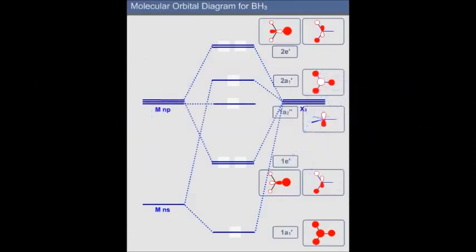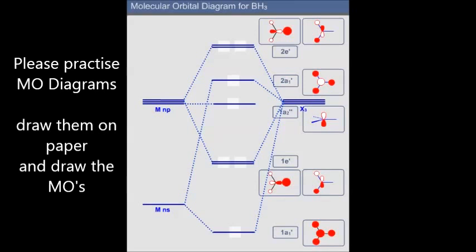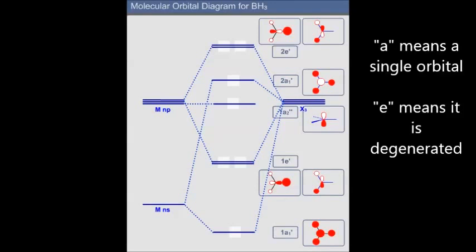So I advise you if you want to practice MO diagrams please write it down on the paper. This will help you to understand. Also draw the orbitals, how they look like. So in this diagram don't get confused about the names A, 1A, 1E and so on. These are symmetry symbols that we will deal later with in the group theory. Take it right now just as a name. Thank you very much.